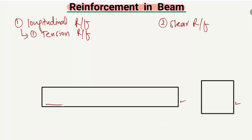Tension reinforcement is provided in the tension zone, in the lower or bottom portion of the beam. If we look at the cross-section, the reinforcement is provided here in the tension zone at the bottom portion. These are the steel bars provided to take the tensile stresses, because concrete is weak in tension.